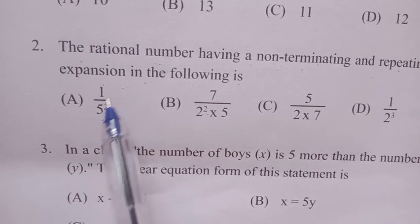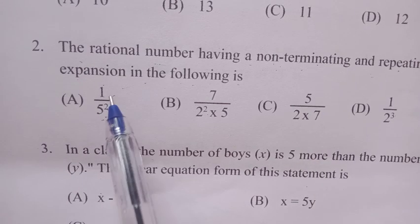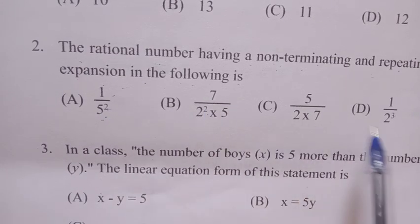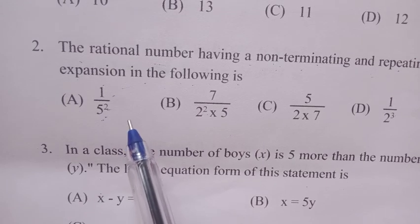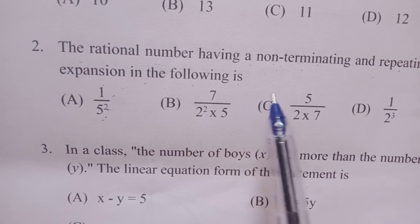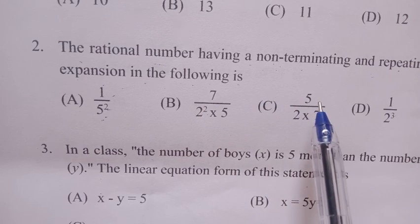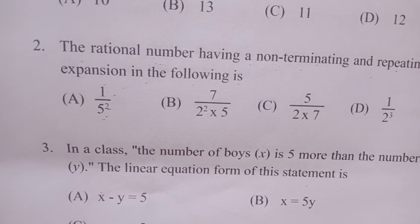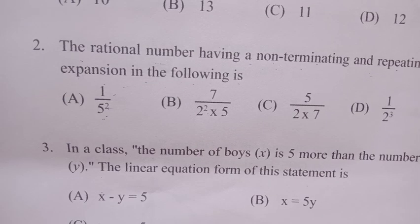When you divide this number, if the remainder becomes zero, the quotient digits don't repeat. You need to find out which number satisfies this. Actually, you need to do the division. Otherwise, it's not possible just by looking at the problem.